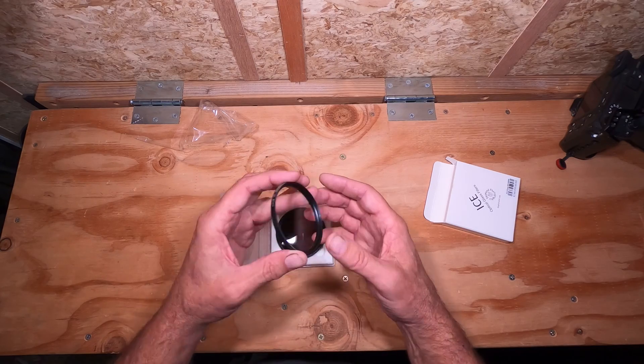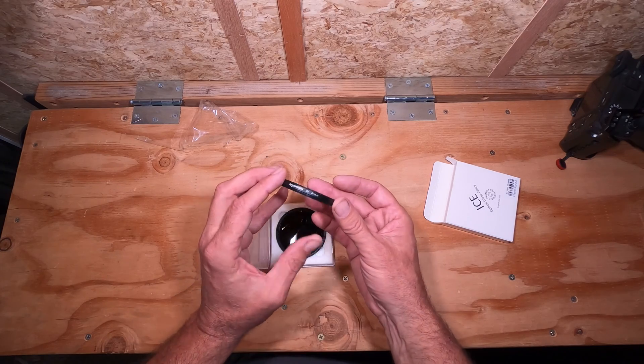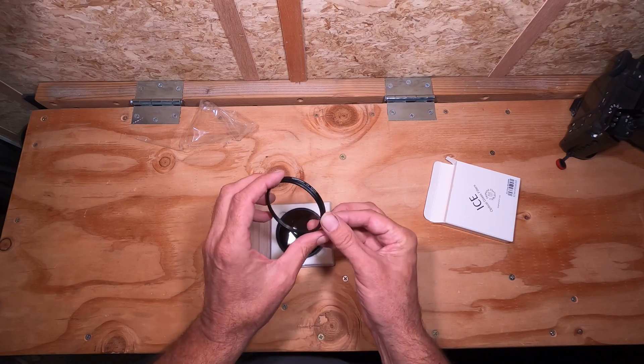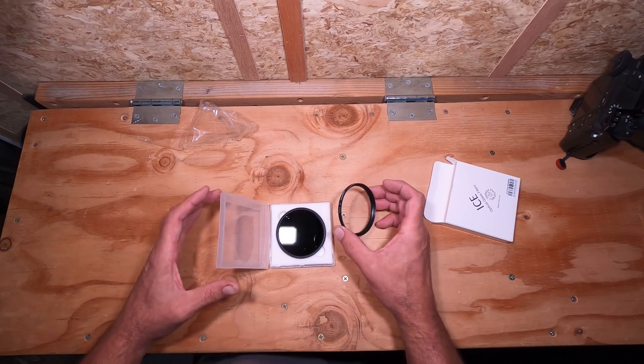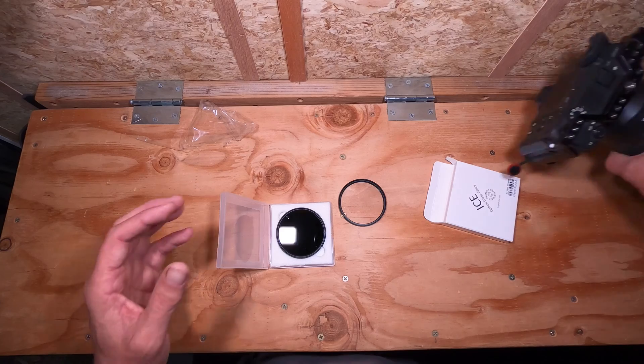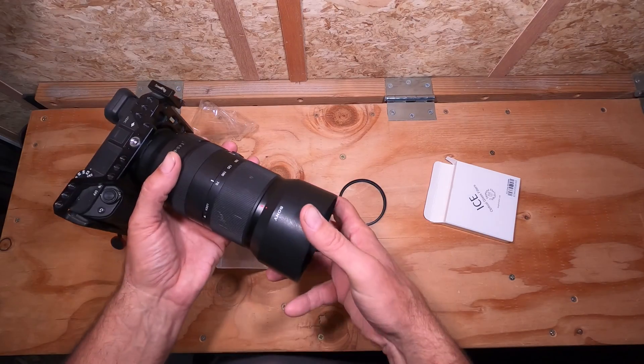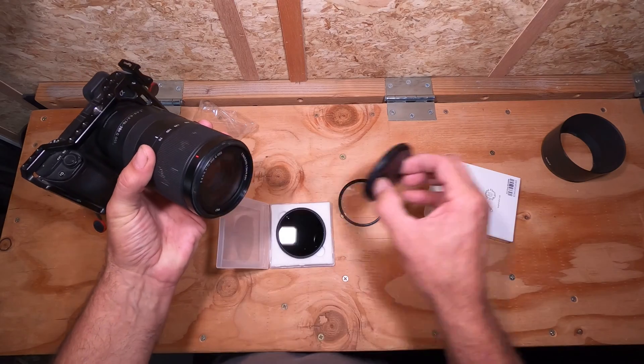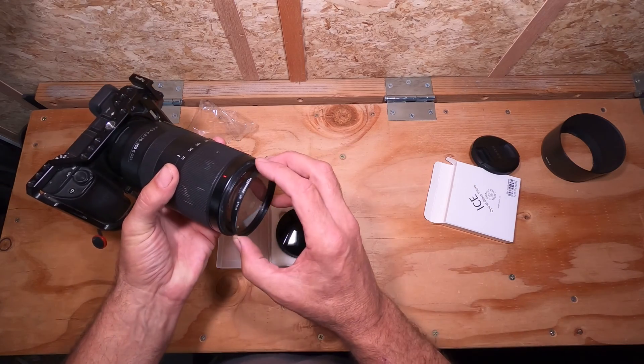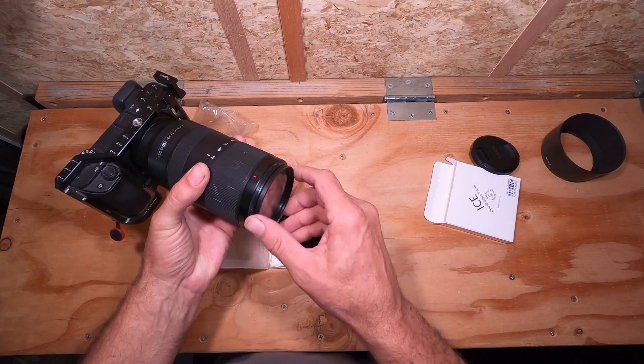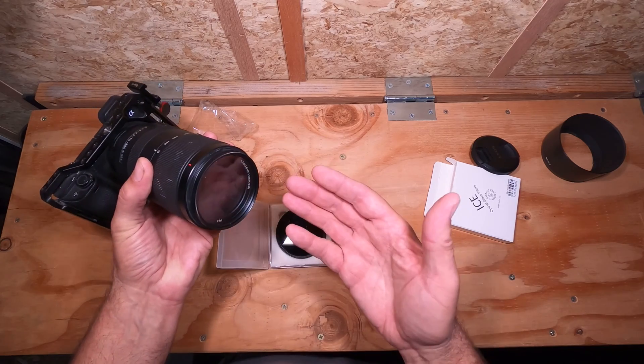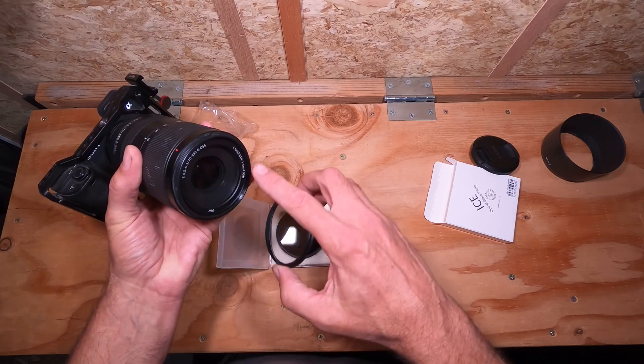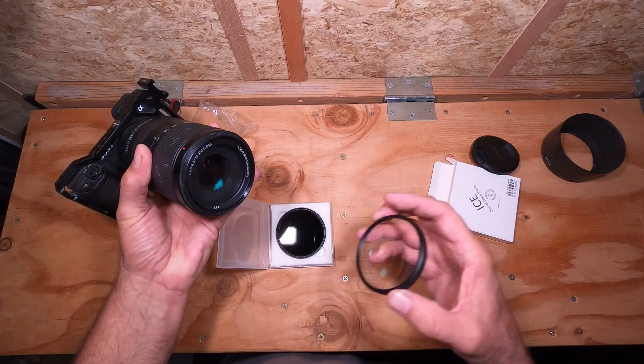I use these UV filters, just the least expensive ones I could find, and I put them on basically all of my lenses, all of my Sony lenses that I have or Tamron lenses. I use this UV filter just as protection to keep that front element just a tiny bit safer.